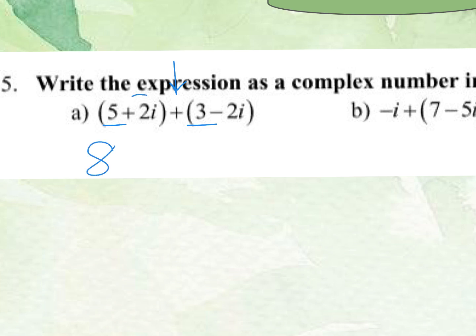And then I have an imaginary plus 2i and an imaginary minus 2i. So those are actually going to cancel out. So my final answer on that one is just going to be 8.